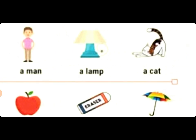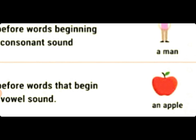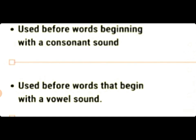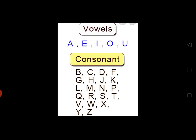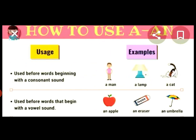Now I will show you when we use 'an'. We use 'an' before words that begin with a vowel sound. What is a vowel? Vowel letters are those letters that are pronounced without the help of other letters. The vowel letters are: A, E, I, O, U. The remaining letters are consonant letters. So when a word starts with a vowel letter, we use 'an'.